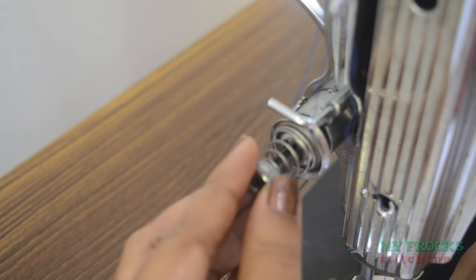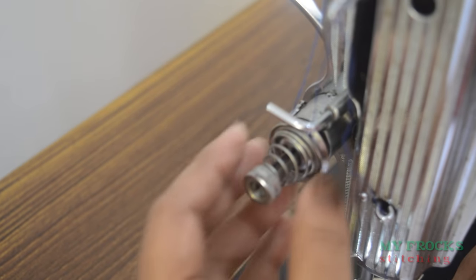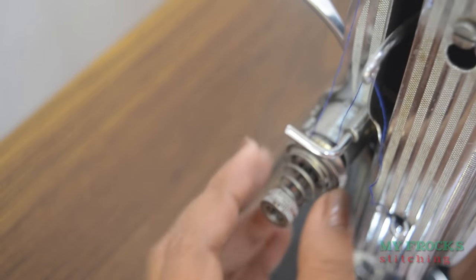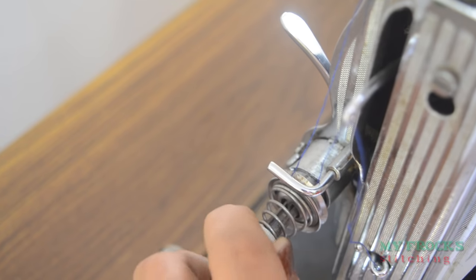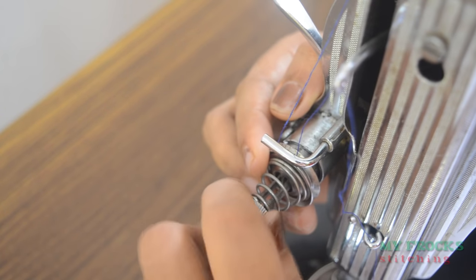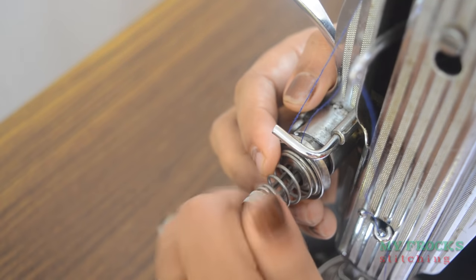Then we have to take out the pieces. We need to remove the bobbin case and the hook assembly.